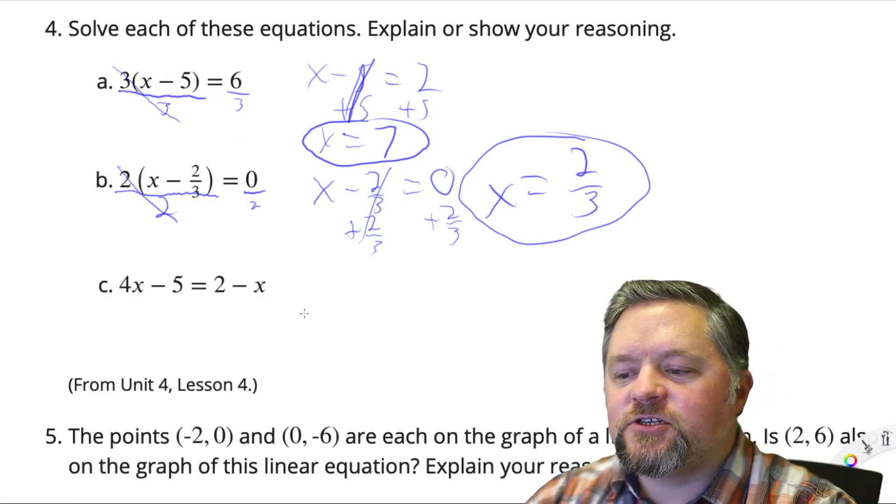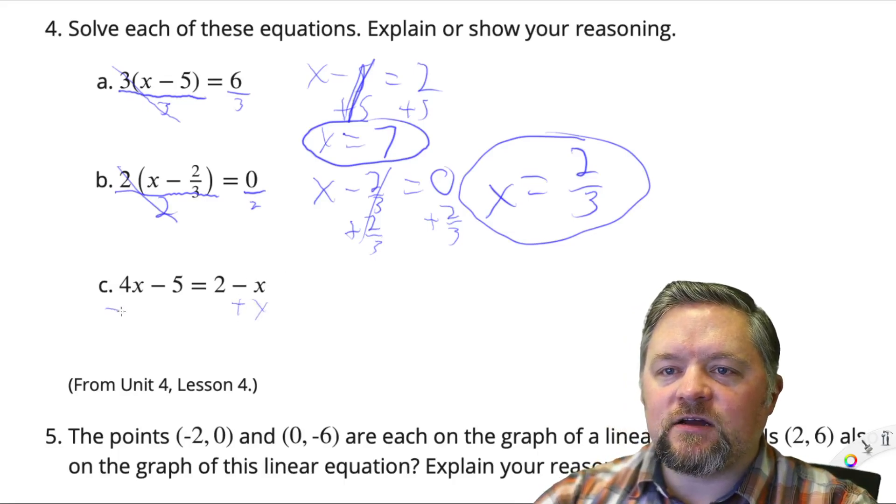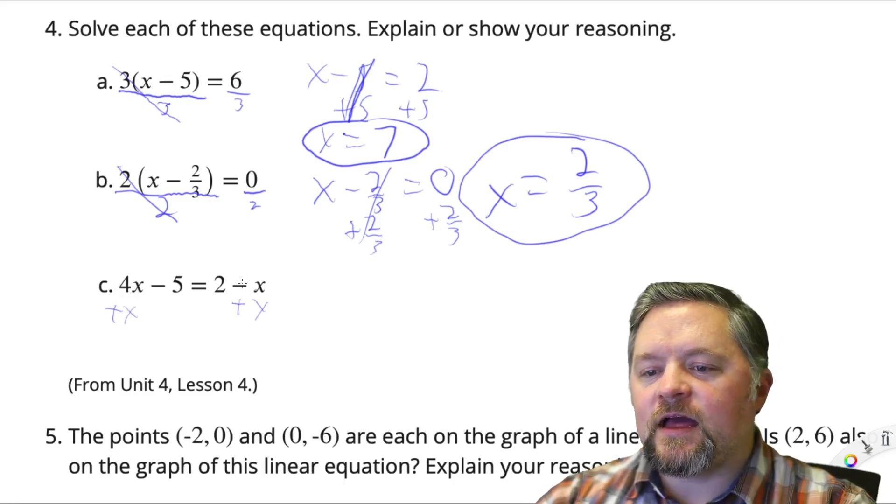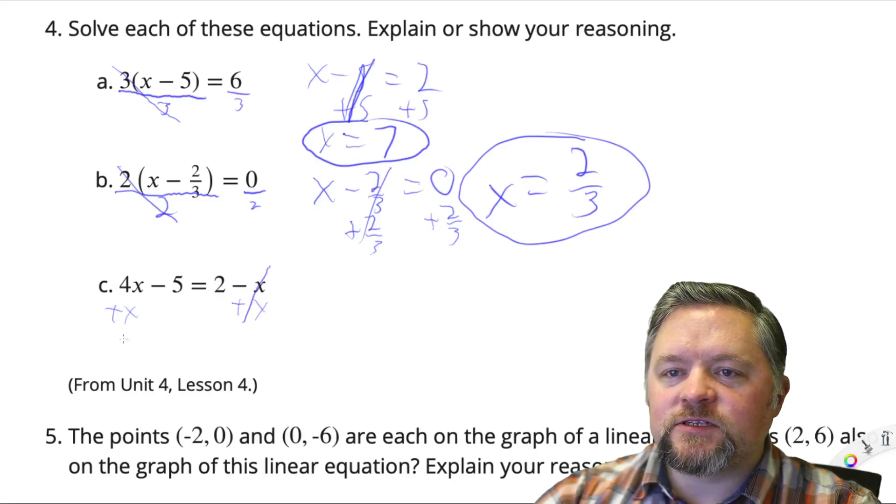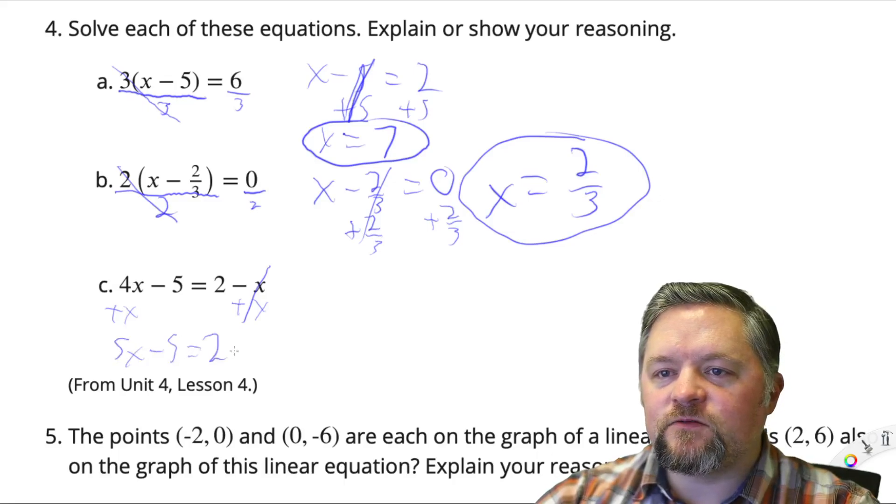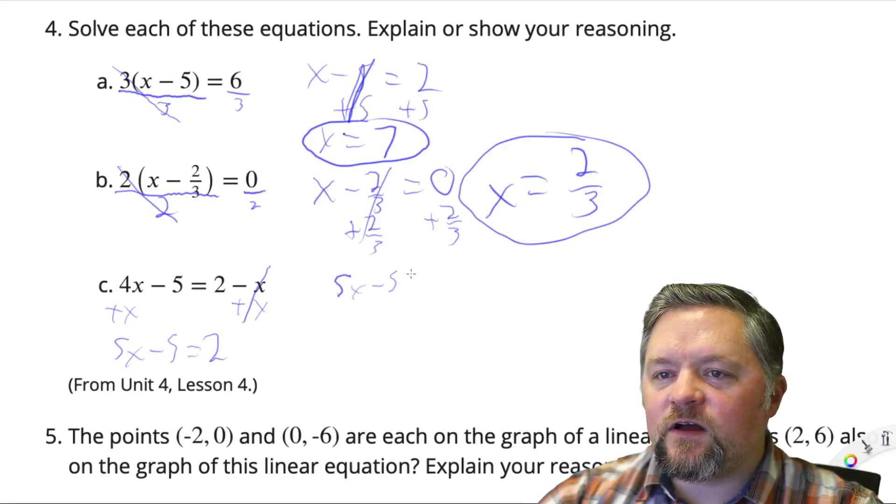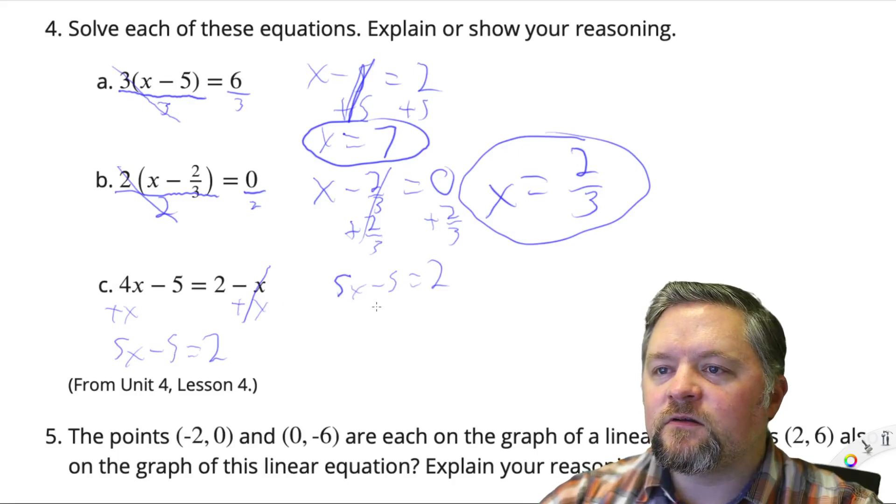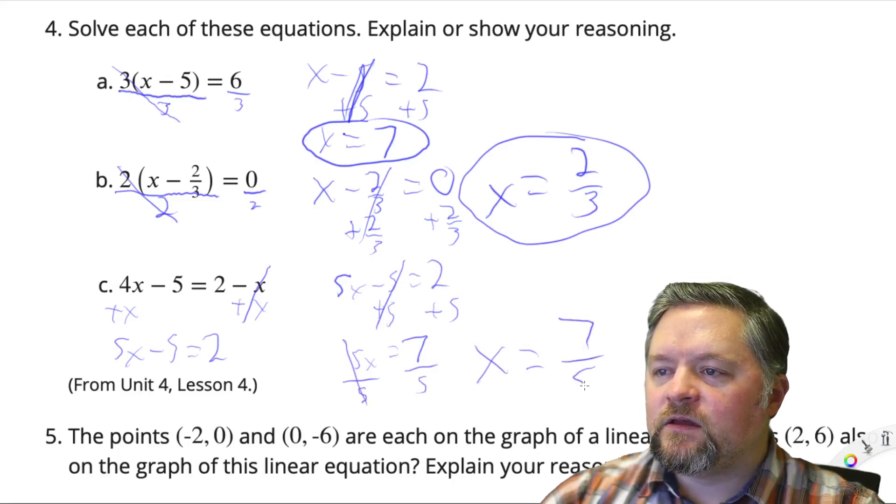Now, x is on each side. We've got to get rid of the x's on one side. So I'm going to add x to each side. Because the left already had more, so let's get rid of them from the right. Those will cancel. 4x plus x is 5x minus 5 equals 2. 5x minus 5 equals 2. I just copied it over. Add 5 to each side to get the x by itself. 5x equals 2 plus 5 is 7. Divide each side by 5. And x equals 7 fifths.